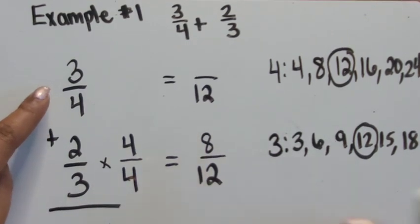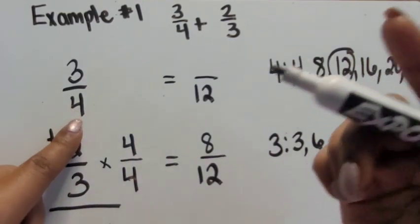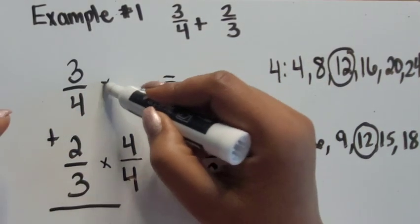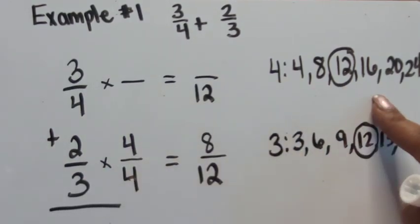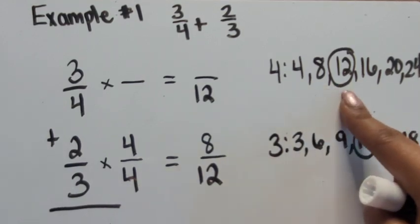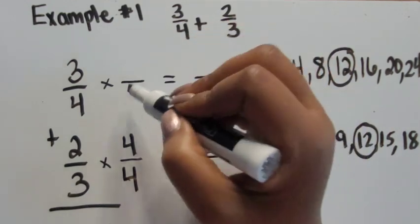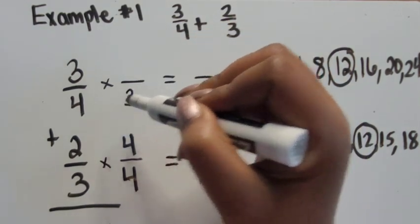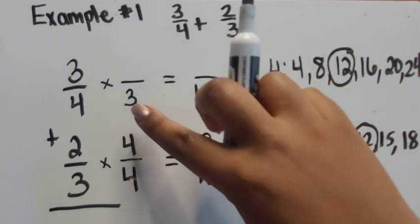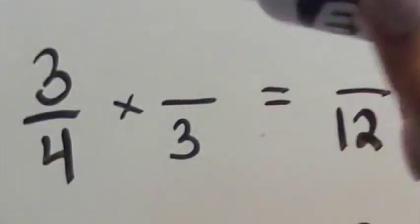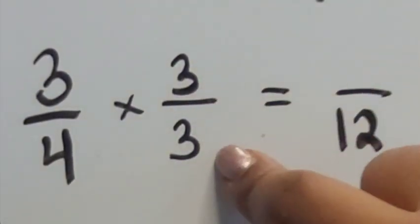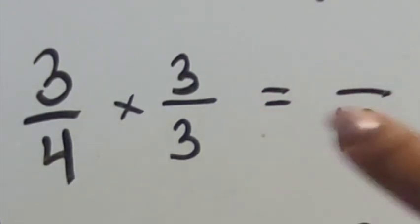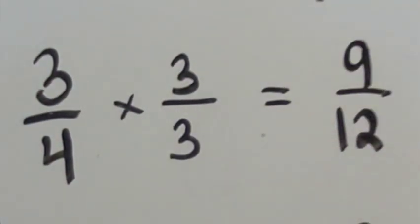Let's do the same thing for three-fourths. Four times what number equals 12? Looking at the list of multiples, three groups of four equals 12, so four times three is 12. We do the same with the numerator — the fraction we're multiplying by should be equivalent to one whole. Three times three is nine. So three-fourths is equivalent to nine-twelfths.